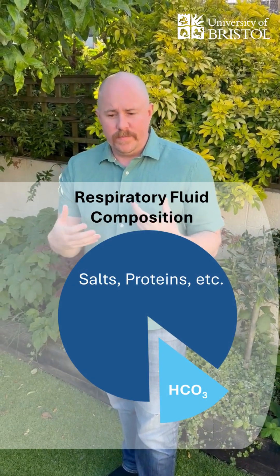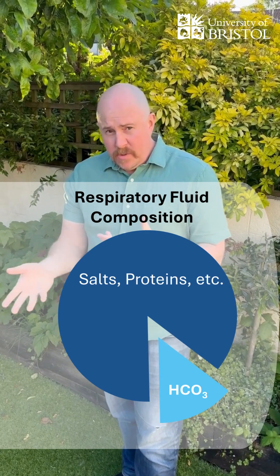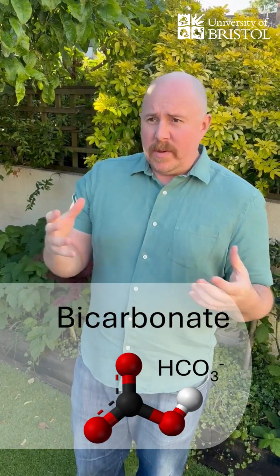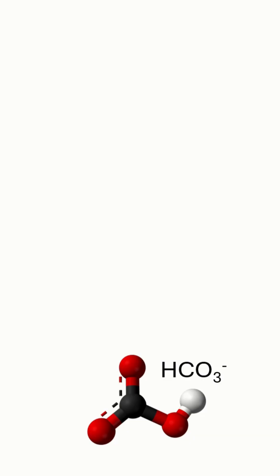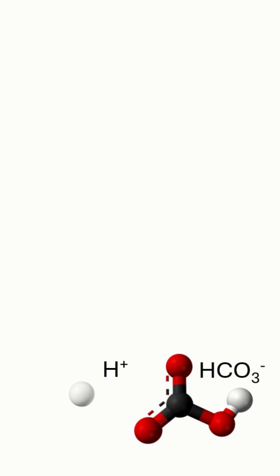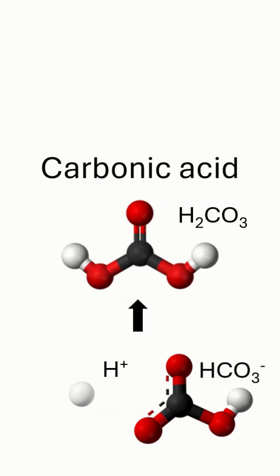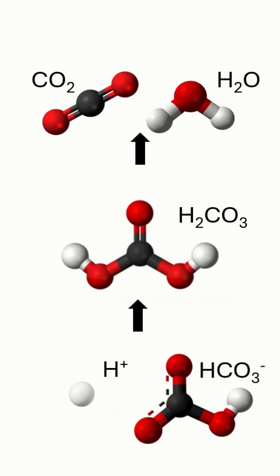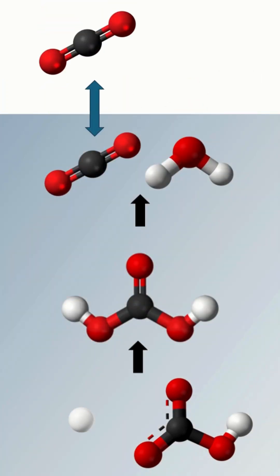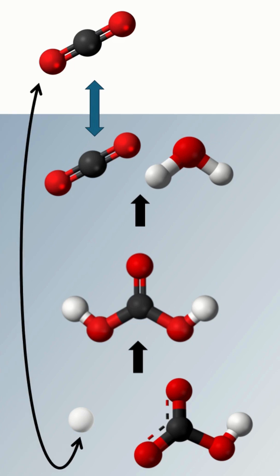The body is filled with dissolved CO2 in the form of bicarbonate — it's a byproduct of metabolism. Additionally, the body uses this dissolved CO2 to buffer the pH of respiratory fluids. Bicarbonate reacts with acid to form carbonic acid, which breaks down to form CO2 and water. In solution, the CO2 will equilibrate with the CO2 in the gas phase, meaning the concentration of CO2 in the air will directly affect the pH in the water via this mechanism.